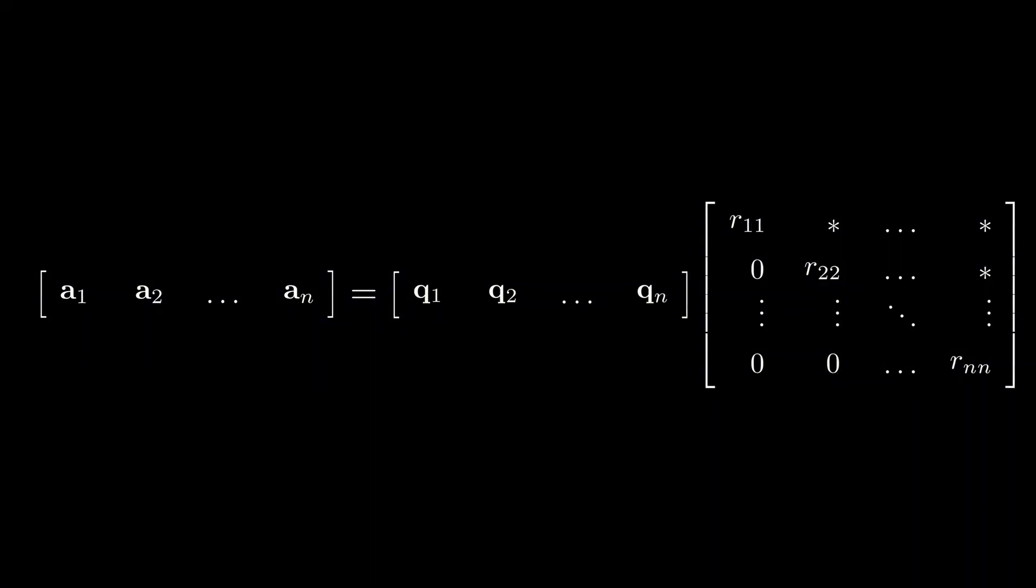So the basic idea of this factorization is that given a certain matrix, we want to break this matrix down into a semi-orthogonal matrix times a square upper triangular matrix.